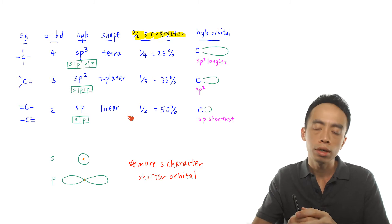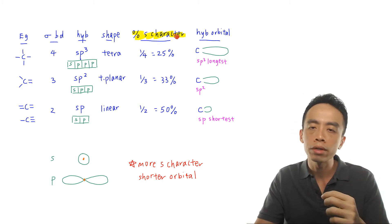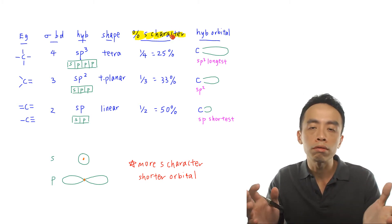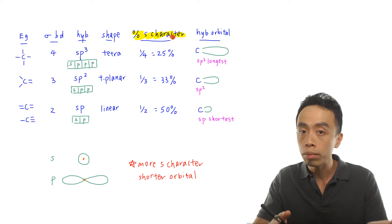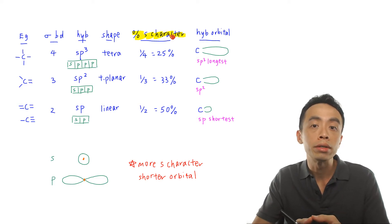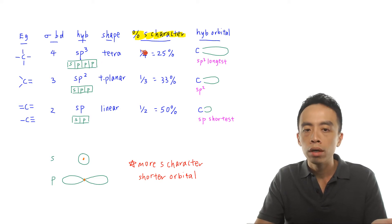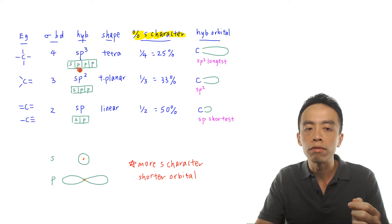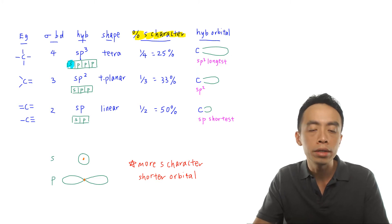We need another idea which is already presented here: percentage s character. Out of the number of orbitals that carbon uses for mixing, how many belong to the 2s orbital? For sp3 hybridized orbital, we are mixing one s orbital and three p orbitals, so the percentage s character is one quarter — out of four orbitals used for mixing, one is the s orbital. The remaining three are p orbitals, so the percentage s character is one quarter, or 25%.